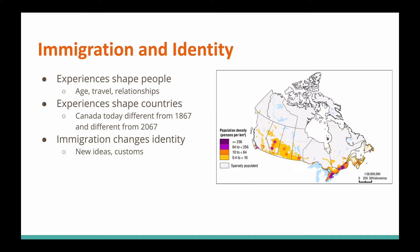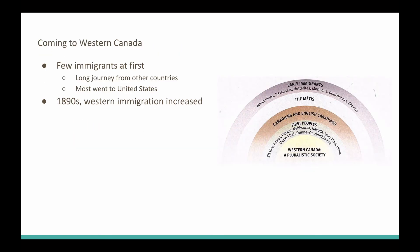Our country today — Canada today — is completely different from the Dominion of Canada in 1867, and it'll be different in 2067. Our identity is going to change, and immigration helps to change that identity. With immigration comes new ideas and new customs. In this period in our Canadian story, we are trying to get immigrants into Western Canada, but there were very few immigrants at first. The journey from other countries was very long.